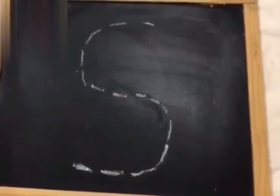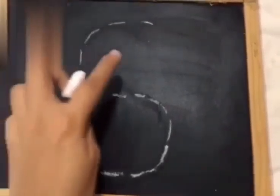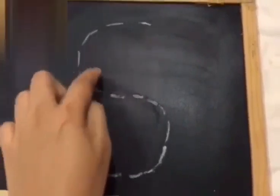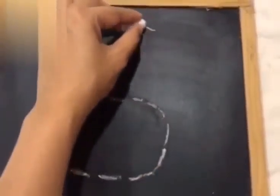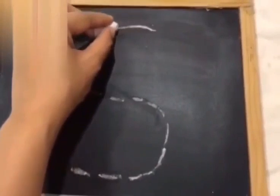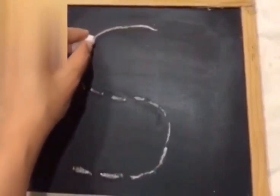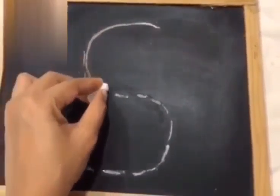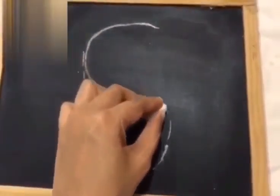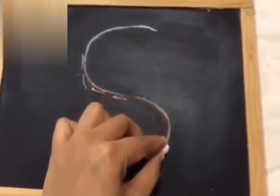Now let's learn how to write the alphabet S. To write the alphabet S, you need two curves. You start from the top, make a curve like this, and a curve like this.